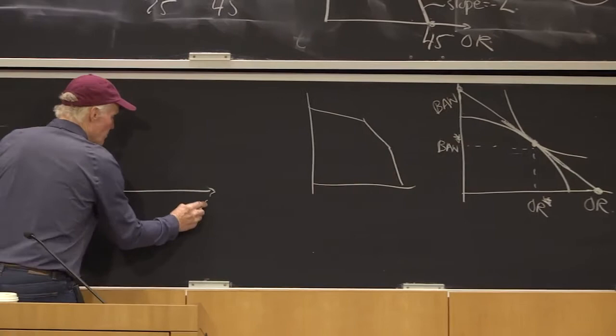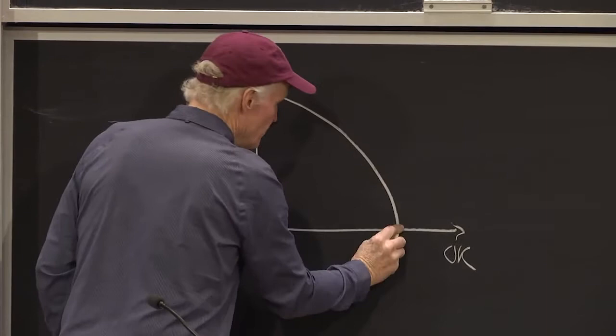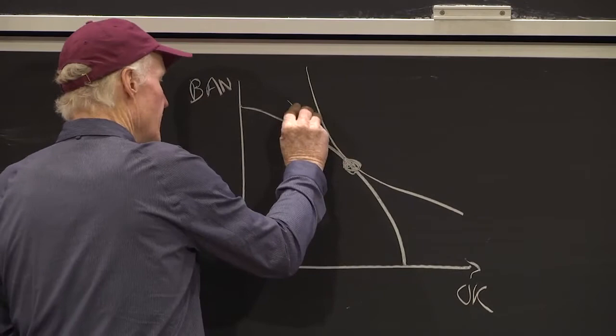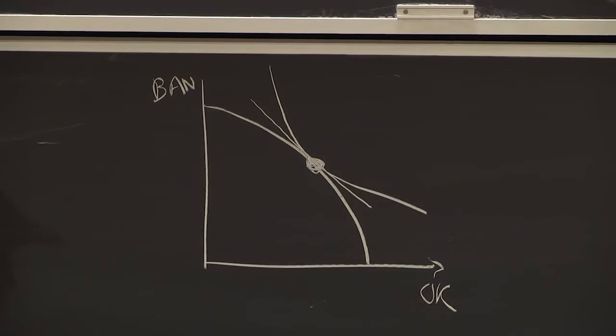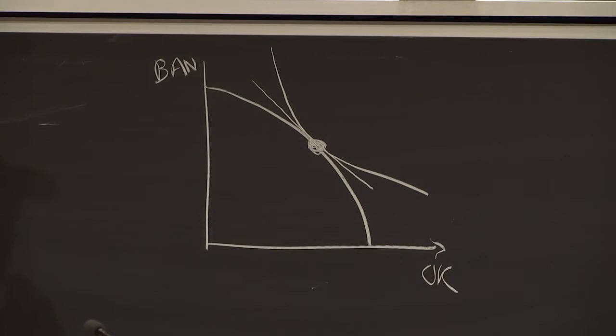All right. So let's assume that the NAFTA price of oranges is higher than his. So here's his picture. He was tangent here. The NAFTA price is higher, which means the slope in the NAFTA world is steeper. That's what it means to have a higher price of oranges.